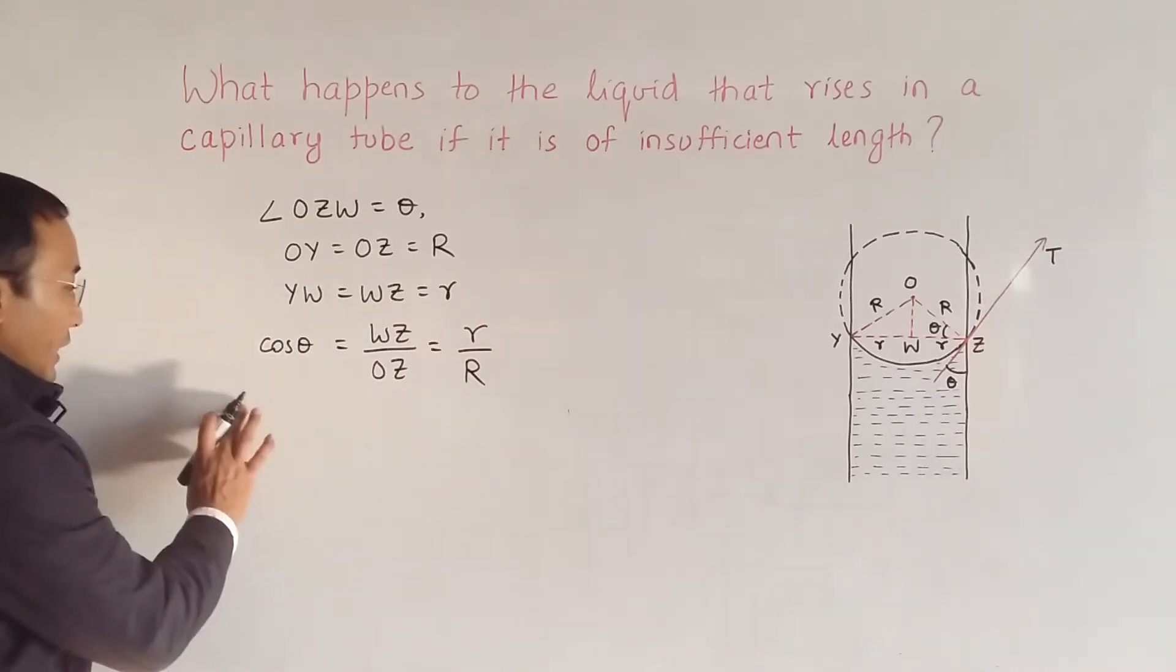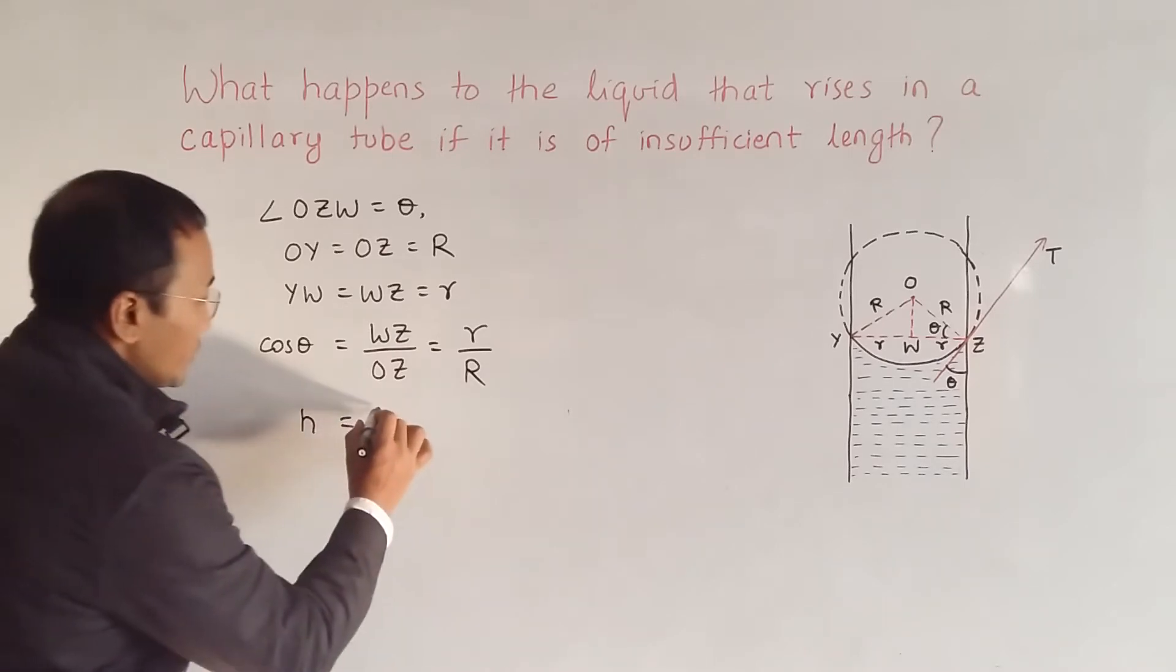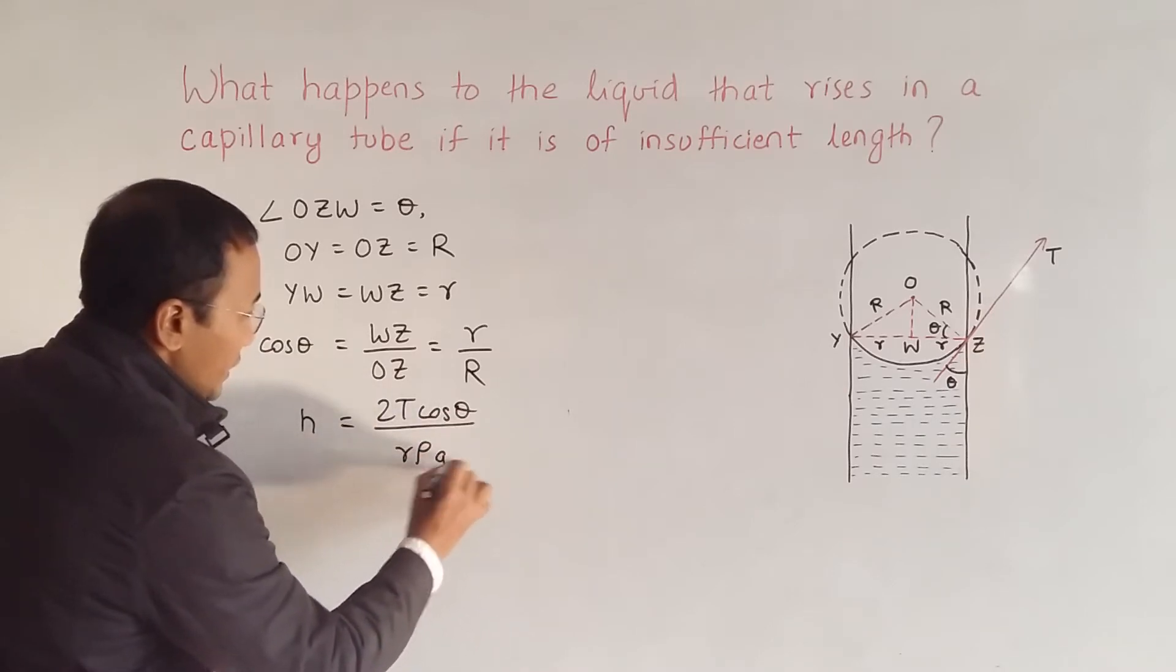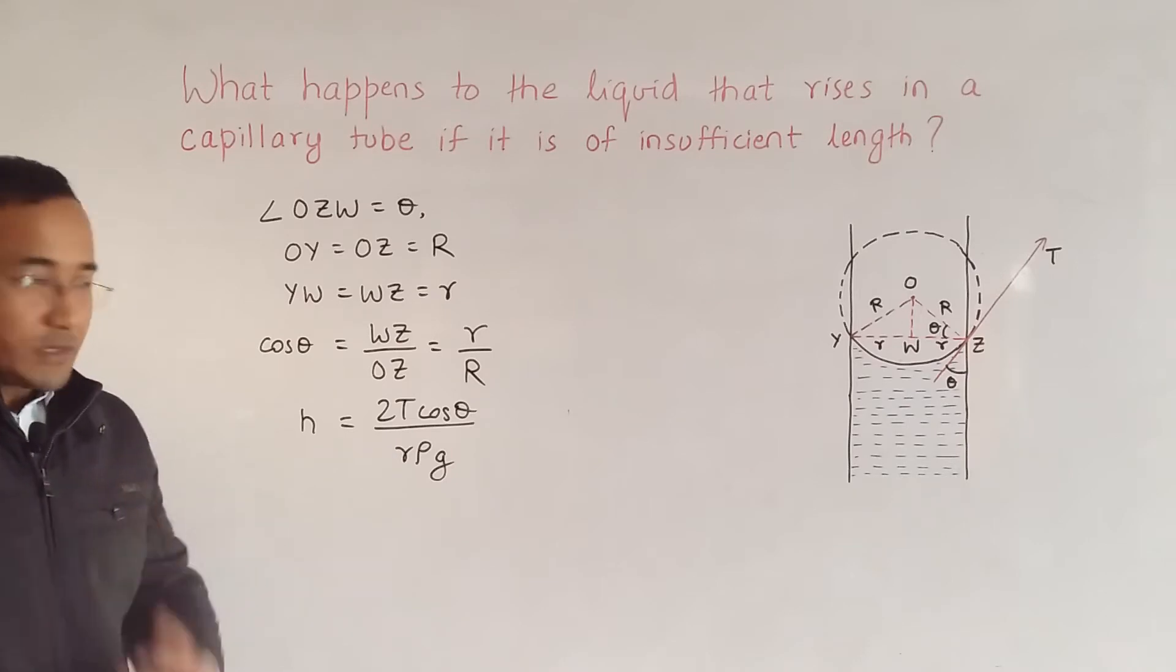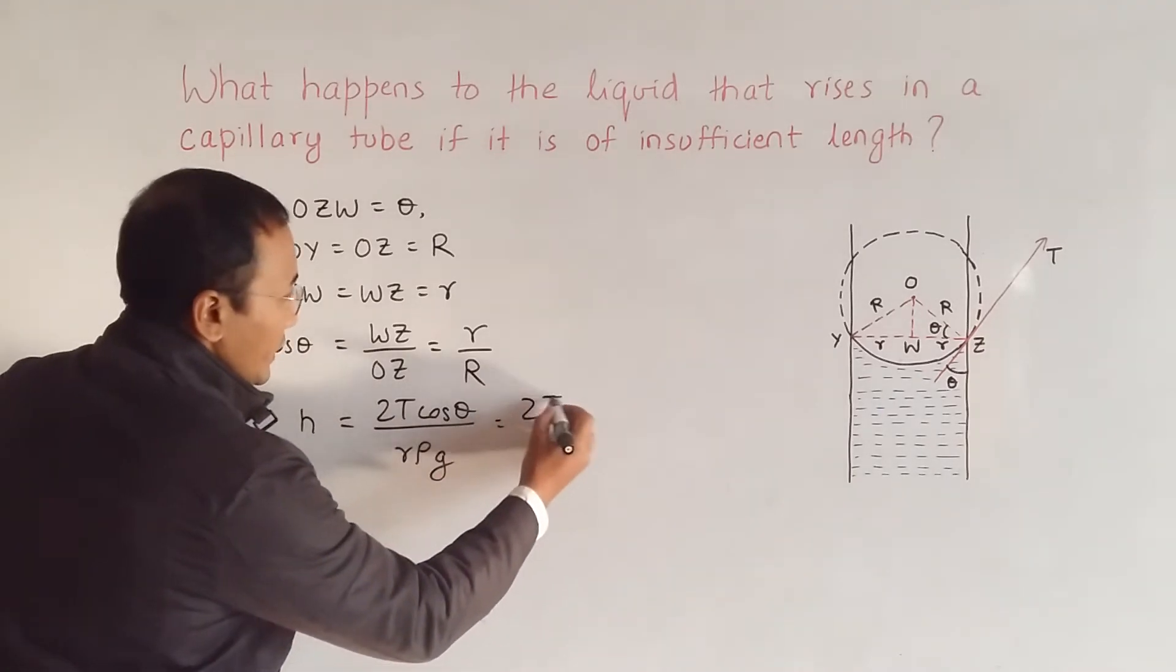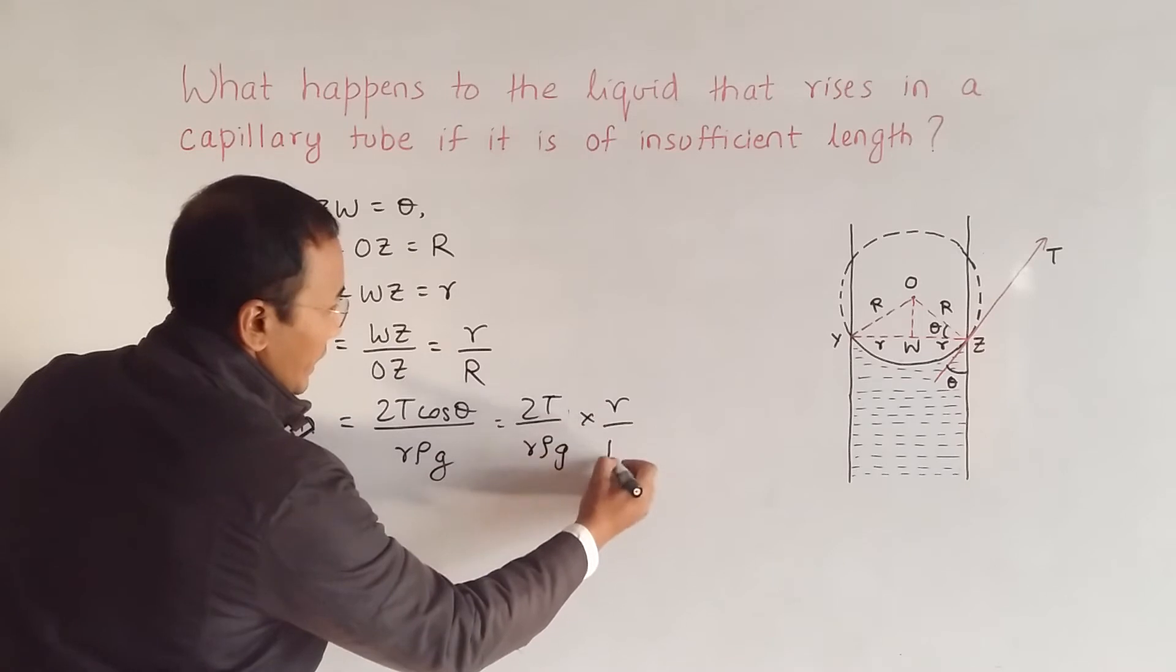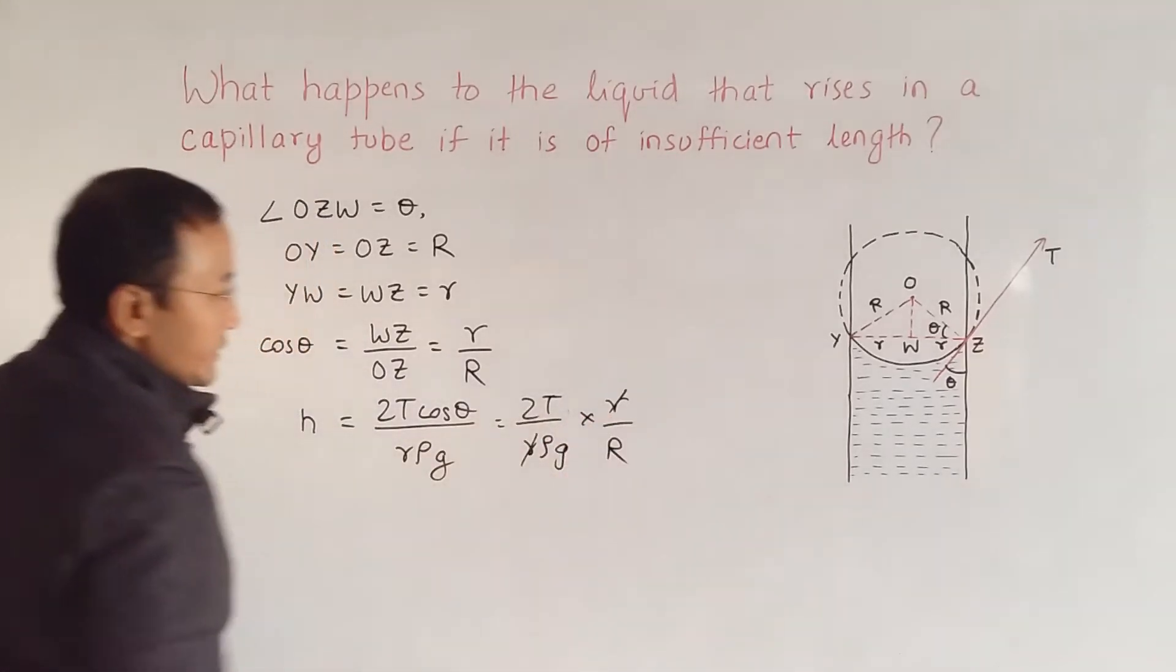The expression for the height that rises in the capillary tube is equal to 2T cos theta by rρg. You can know the terms from your previous studies. And in place of cos theta, I can use here 2T/rρg times r by R, which cancels and gives me 2T by ρg into 1 by R.